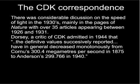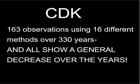There were over 35 articles that appeared between 1926 and 1931. In the late 1980s, the Australian creationist Barry Setterfield examined all the available measurements of C. In fact, there have been 163 observations with thousands of individual experiments using 16 methods over 330 years, and all show a decline in C.